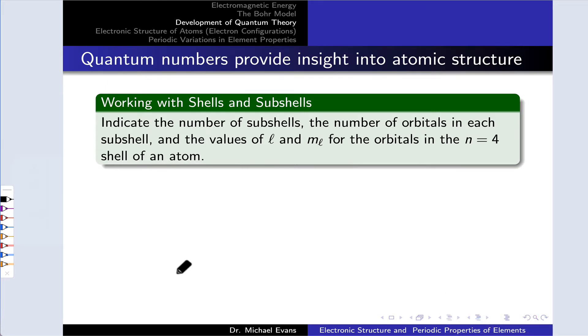First, let's start developing some familiarity with quantum numbers. In this problem, we're asked to indicate the number of subshells and the number of orbitals within each subshell, as well as the values of the quantum numbers L and m sub L for all of the orbitals in the n equals 4 shell of an atom. So this sounds like a lot,